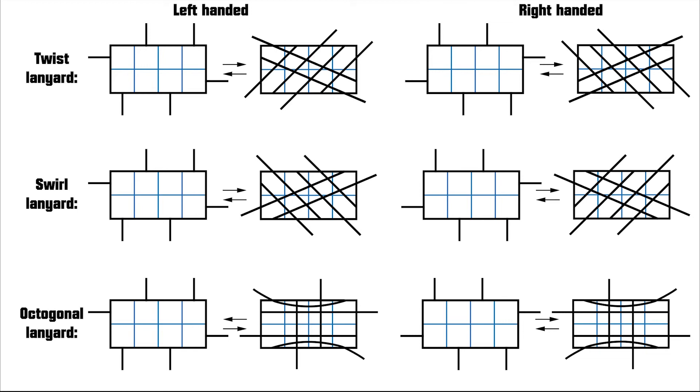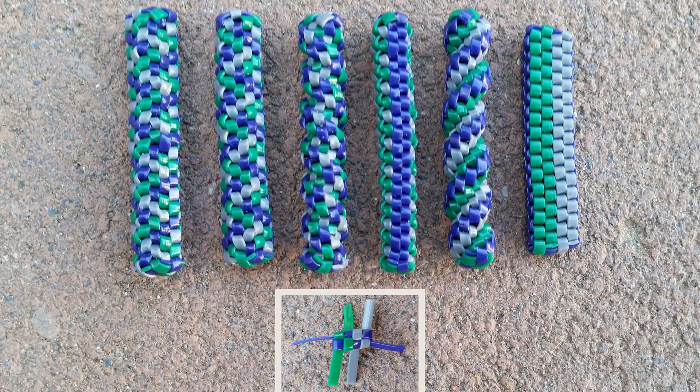in that the sequence is only one single stitch, either a right-hand or a left-hand. This means that we get two lanyards for each of them. A left-handed and a right-handed swirl, and a left-handed and right-handed octagonal.